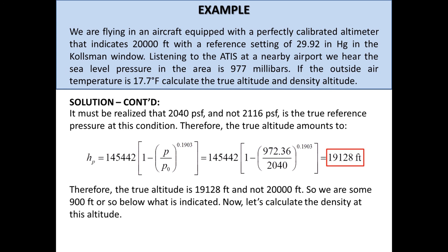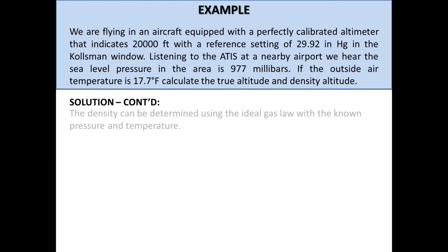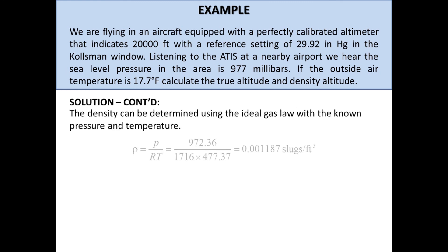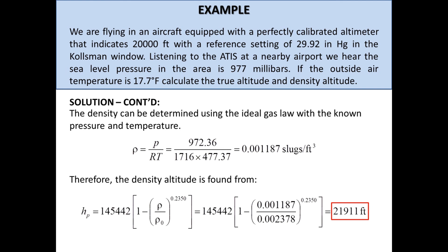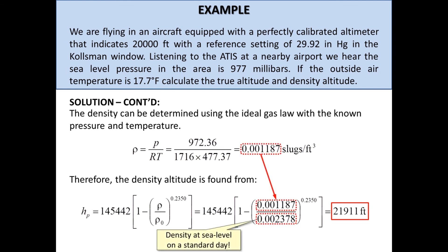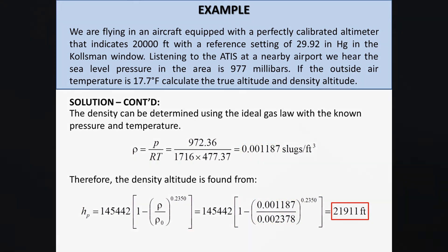Now let's calculate the density at this altitude. The density can be determined using the ideal gas law with the known pressure and temperature, and amounts to 0.001187 slugs per cubic foot. Therefore, the density altitude is 21,911 feet. This example shows how it is possible to simultaneously operate the airplane at a lower true altitude than indicated by the altimeter, while the performance of the airplane would be representative of some 3,000 feet higher altitude.